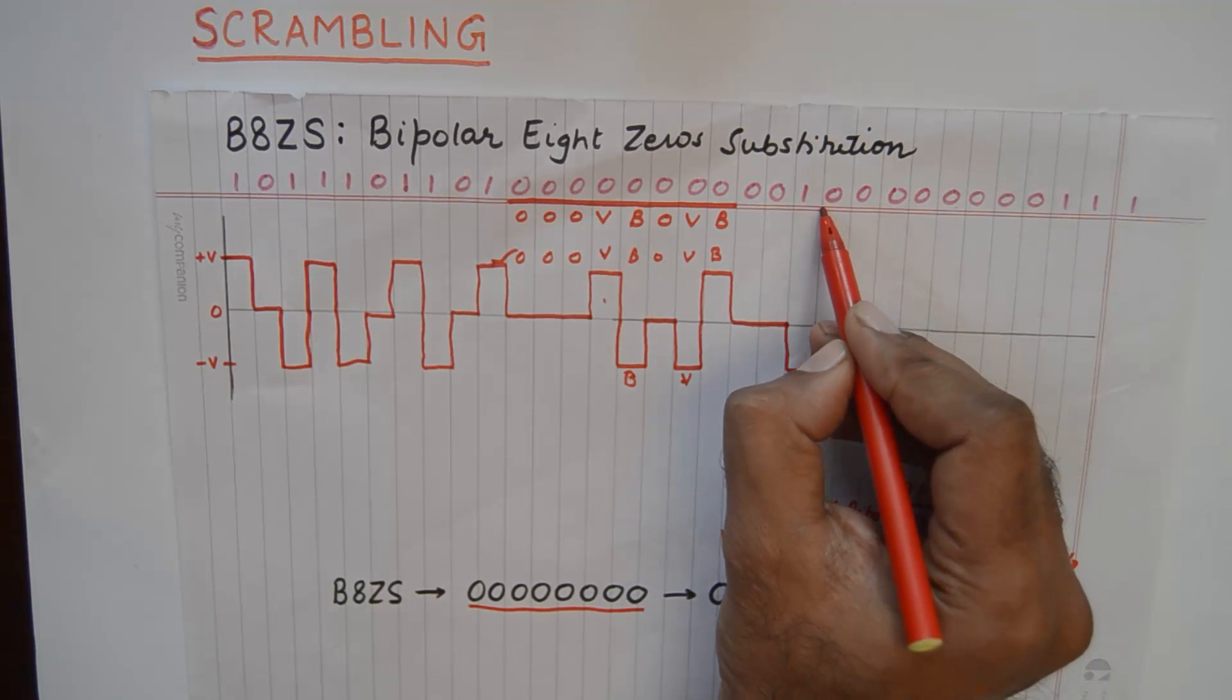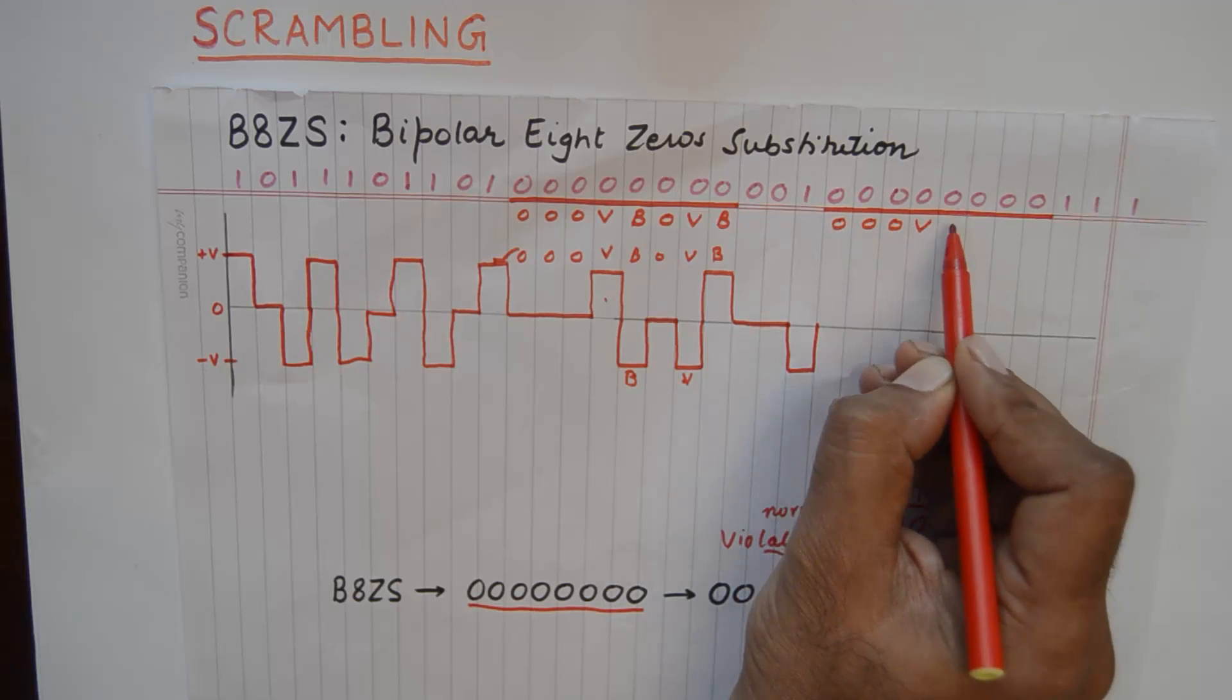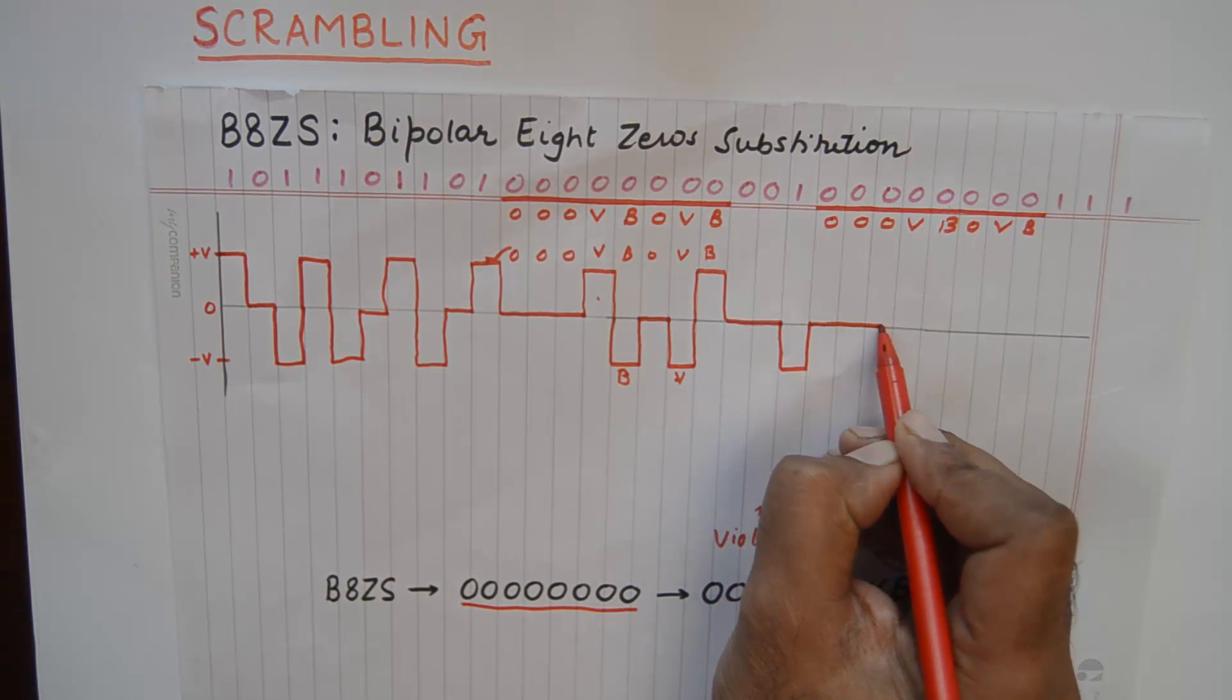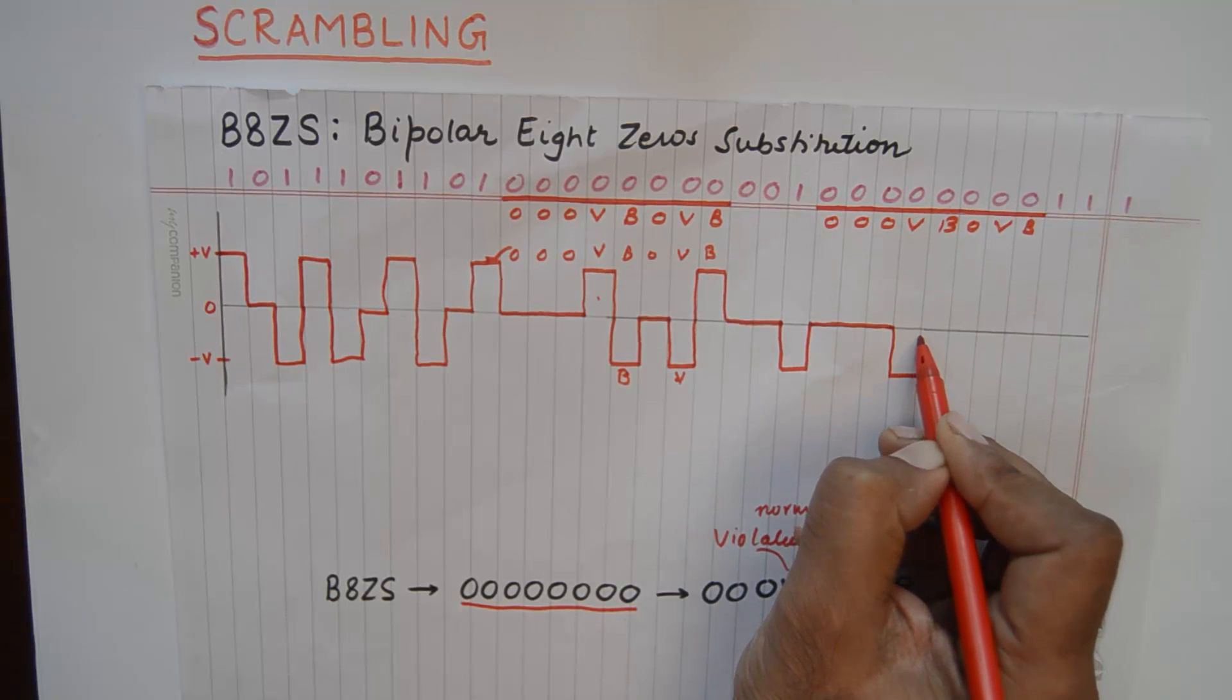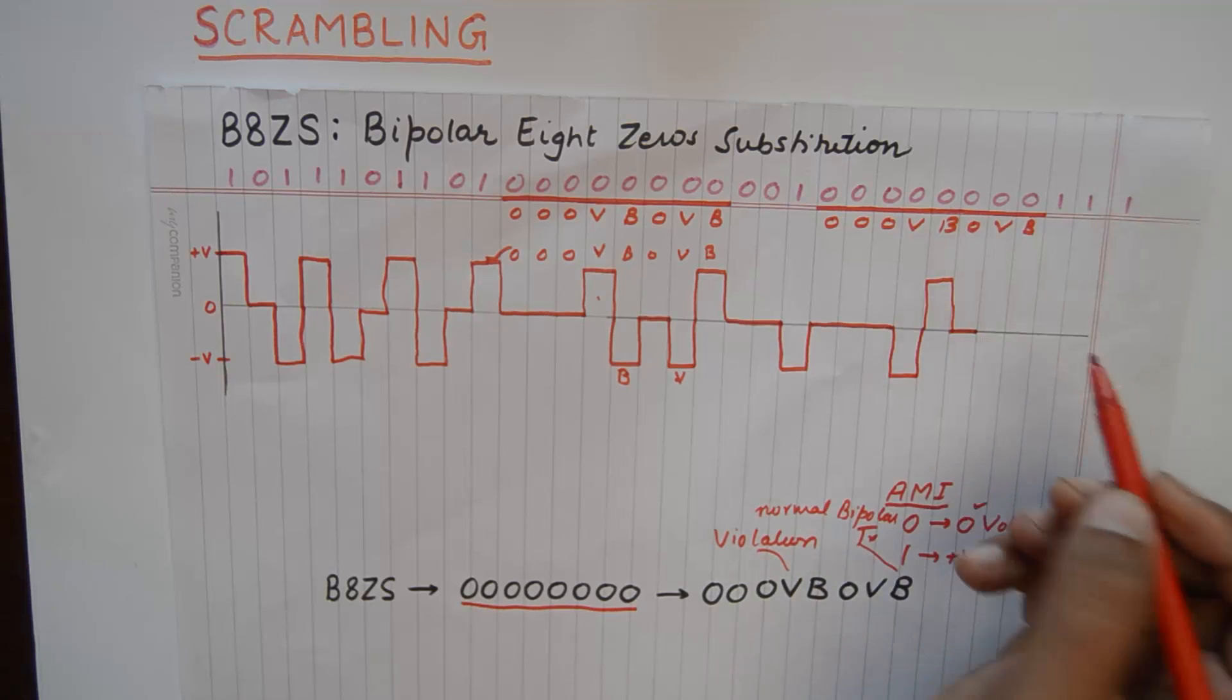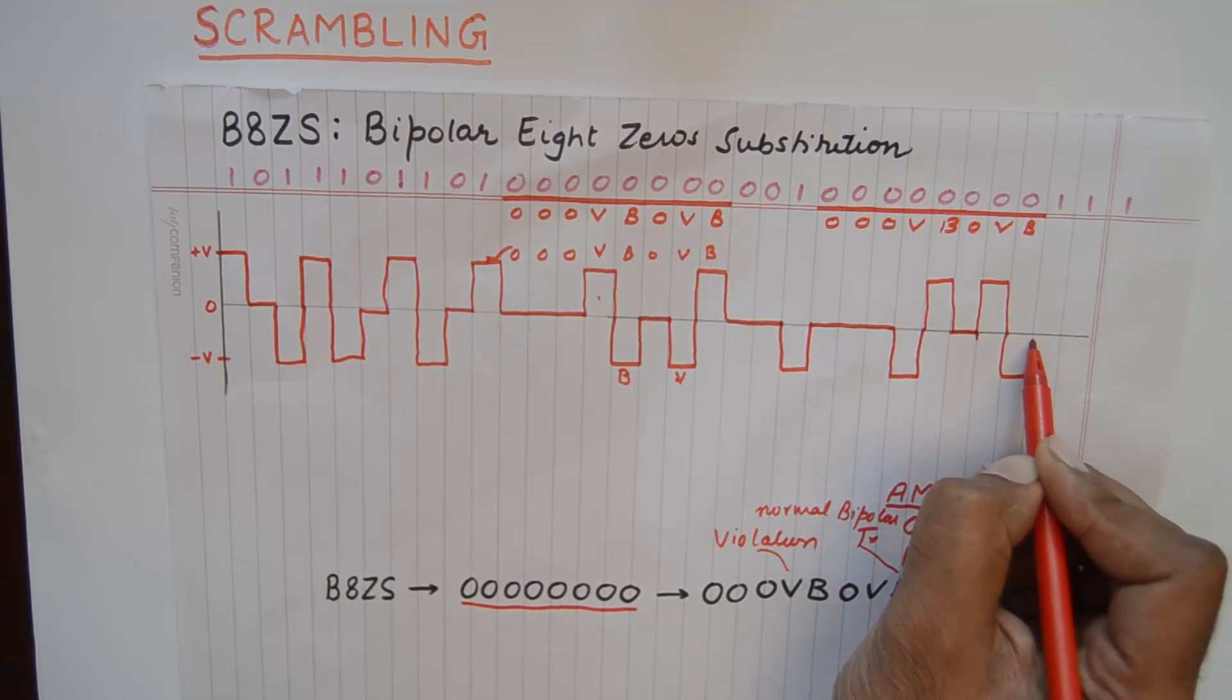Now again we have eight zeros, exactly eight zeros, so write down the code here again. Encoding will be pretty easy now. Violation here will mean that we will stay at negative instead of going to positive. Now a normal bipolar transition will take us to positive, and a zero, and a violation again will keep me in positive, and a bipolar transition will keep me here.